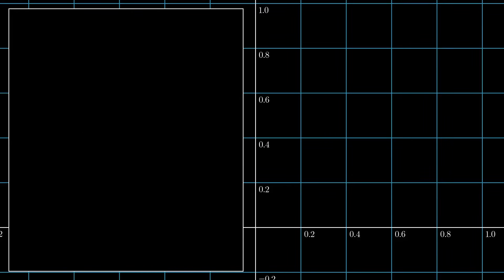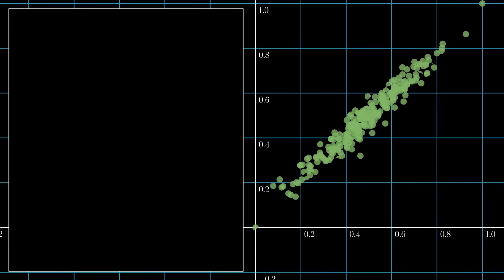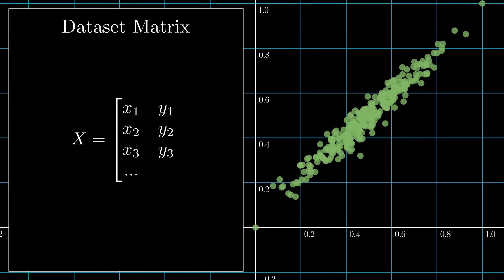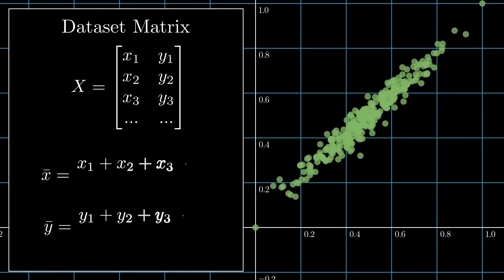The first step in principal component analysis is to calculate the covariance matrix of the data set. Let's look at a simple example using our previous 2D data set. To calculate the covariance matrix, we first need to center our data.